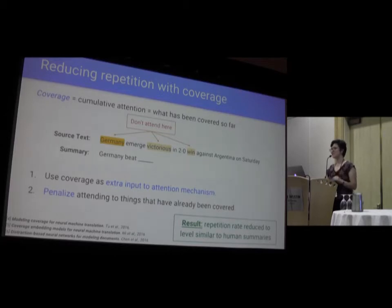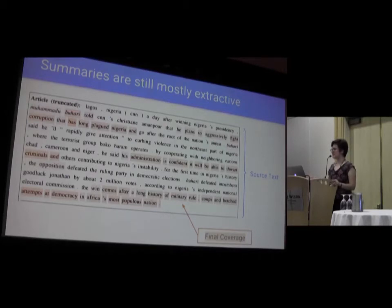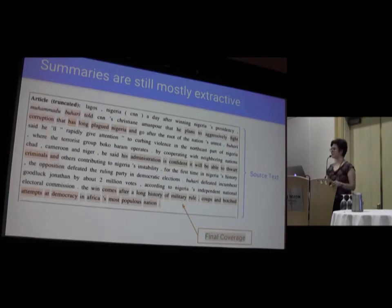However, there is still a remaining limitation. Our summaries are still mostly extractive. Here's an example from the dataset: the yellow highlighting tells us the final value of the coverage, and as you can see, the summary is mostly copying quite long sequences of text at the sentence or phrase level. It does, for example, leave out an extra clause in the first sentence, but on the whole it's still mostly copying. This is definitely the main area for improvement in future work.